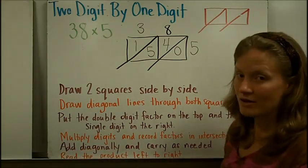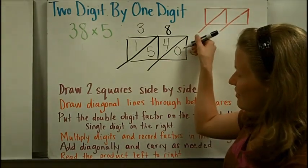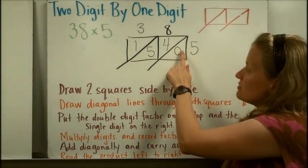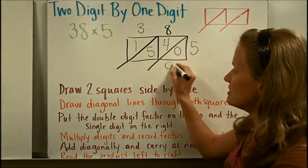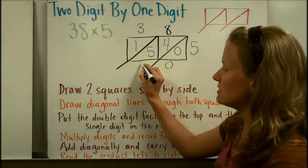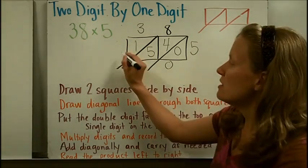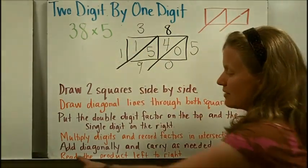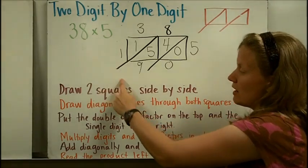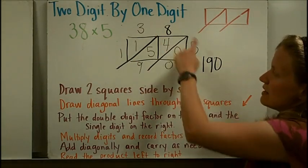Now I add diagonally and carry as needed, starting in the ones place and adding down. There's nothing to add in the first column — just a 0. In the next diagonal column I can see 4 and 5, which I add together to get 9. In the last diagonal column there's nothing else inside the box, so I bring that 1 down. Then I read the product left to right: 1, 9, 0 — so the product of 38 and 5 is 190.